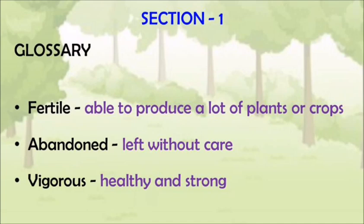The first glossary is 'fertile' — fertile means able to produce a lot of plants or crops. The second one is 'abandoned' — abandoned means left without care. And the third one is 'vigorous' — vigorous means healthy and strong plants. These are the three glossaries from the first section.